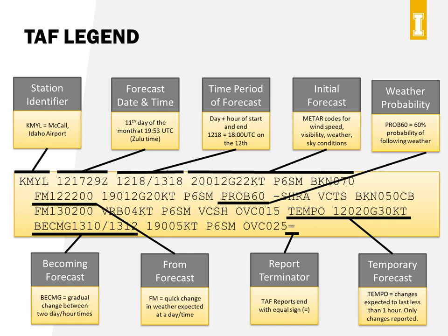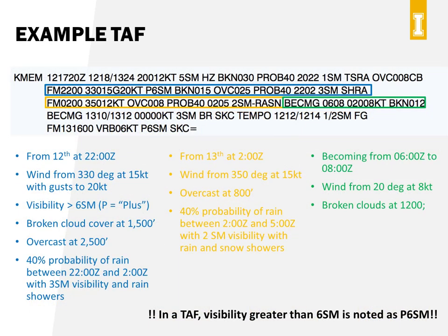One important thing about TAF reports: they only report conditions expected to change during the time period. So if everything stays the same except precipitation probability increases, a FROM statement would only contain the probability and precipitation codes. This TAF from Figure 15 in Appendix 2 of the testing supplement is worth spending time with and learning to break apart.